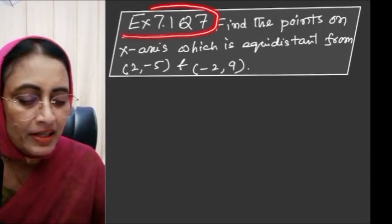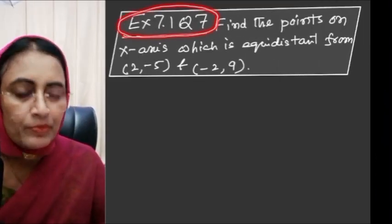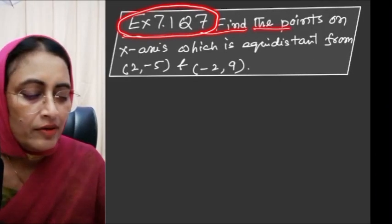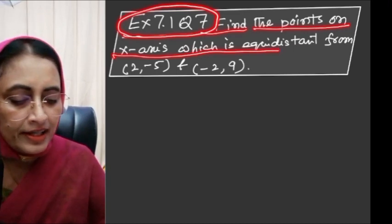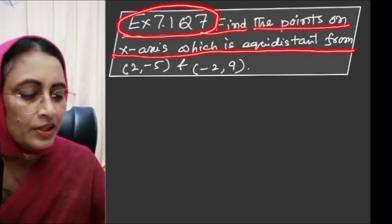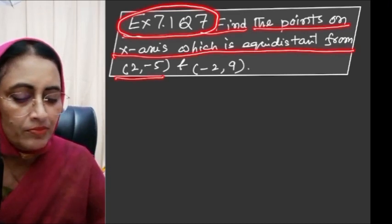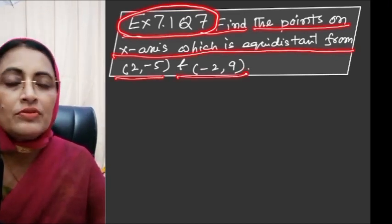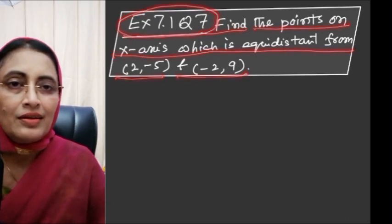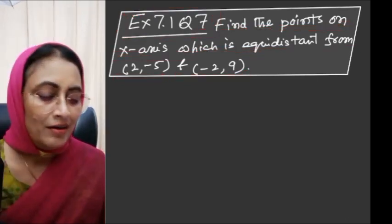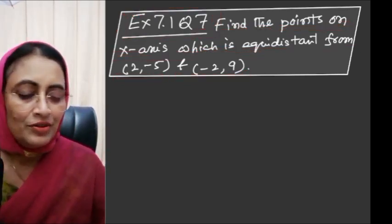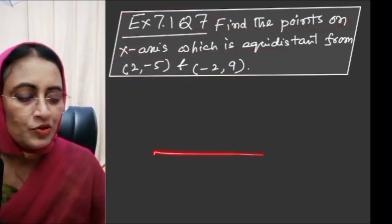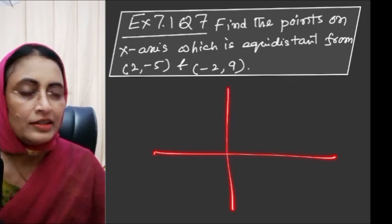This is Question number 7, Exercise 7.1: Find the point on the x-axis which is equidistant from (2,-5) and (-2,9). This is very simple.